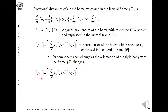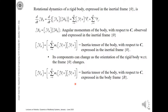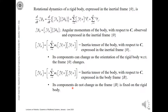If we fix a frame b on the rigid body, then we have the inertia tensor expressed in frame b, defined similarly but with vectors from the center of mass to point i expressed in the body frame b. This vector is constant because in the body frame the point i does not move. The r-cross matrix is obtained from this vector and is multiplied twice. Therefore, the components of this inertia tensor do not change, since the frame b is fixed on the rigid body.